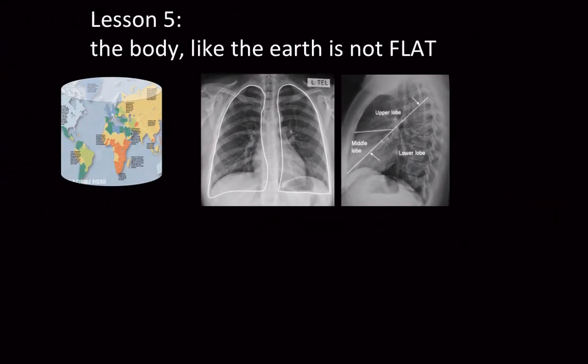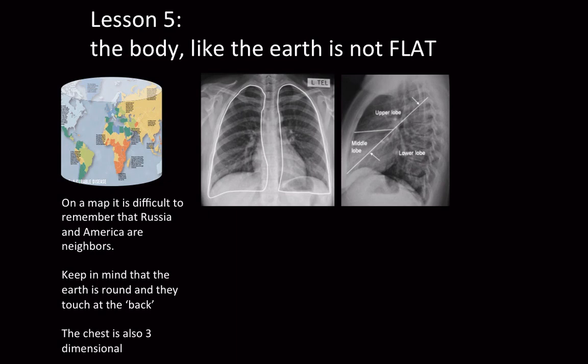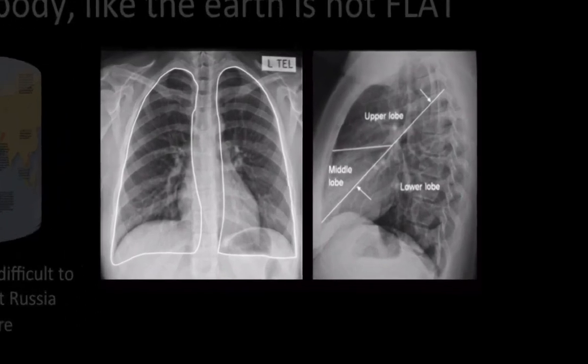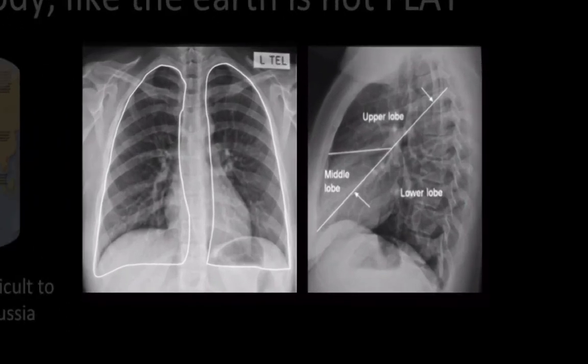This is the last lesson and something I had a lot of trouble with. When I used to look at a map of the world, I could never understand why people said that America and Russia were neighbors — until you fold the map and realize they touch at the back of the globe, because the world is round, not flat. The same concept holds for the chest: the chest is like a box rather than a flat piece of paper. If you look at a frontal chest radiograph and a lateral chest radiograph, you can see that the diaphragms on the frontal view do not indicate the lowermost extent of the lung.